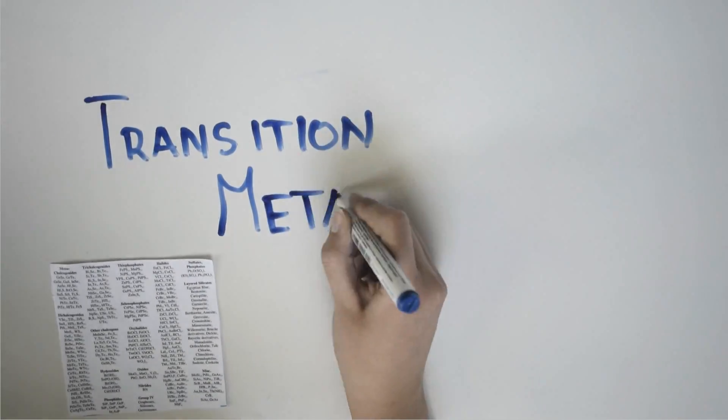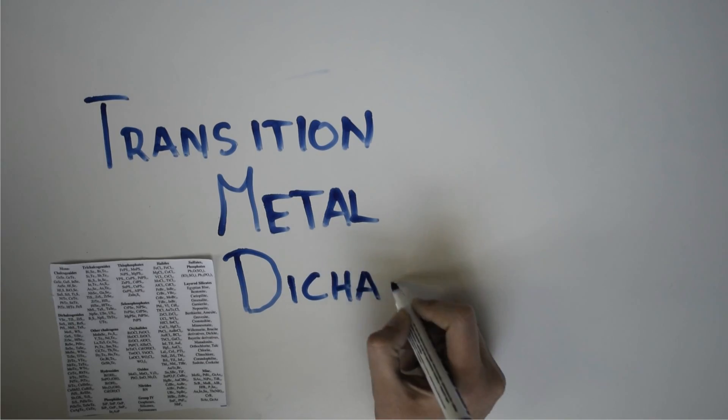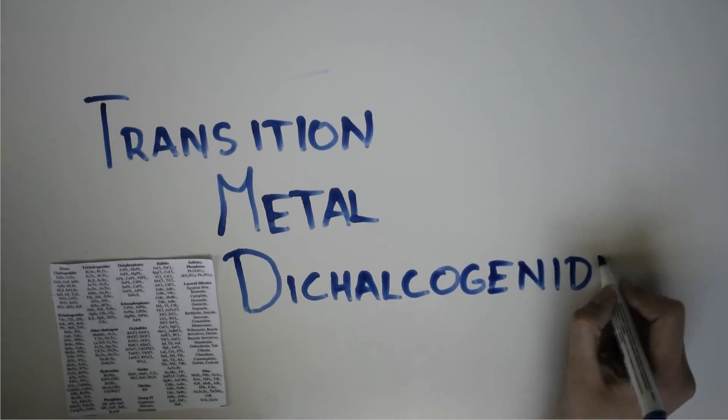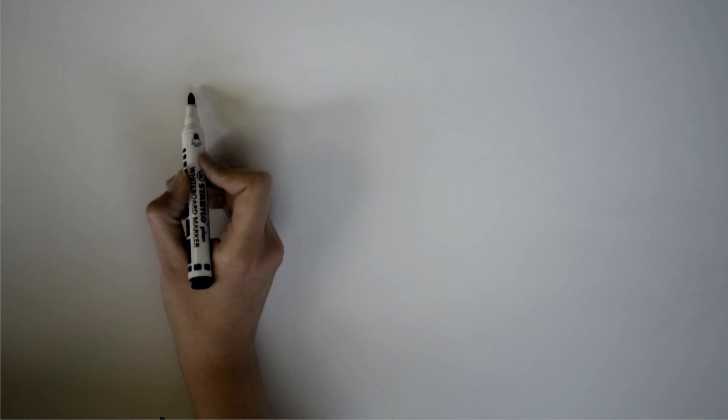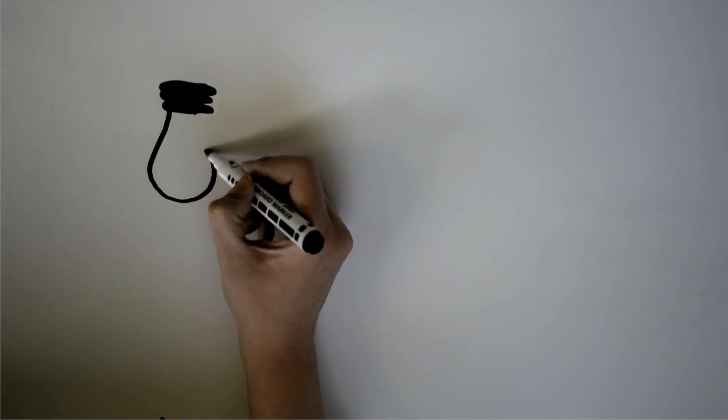One group of 2D materials, known as TMDs, has exceptional semiconductor properties. Unlike graphene, a TMD monolayer is three atoms thick. Each sheet consists of a layer of transition metal atoms between two planes of chalcogen atoms.